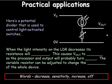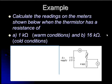I'll leave you with one last question example, and this is more numerical. So, with this circuit which is shown here, you're asked to calculate the readings when the meters shown below, when the thermistor has a resistance of 1 kilo-ohm in warm conditions and 16 kilo-ohms in cold conditions. Now, we're looking for a current reading and a voltage reading. So I'm going to give you a moment just to press pause and go through and see if you can solve this.